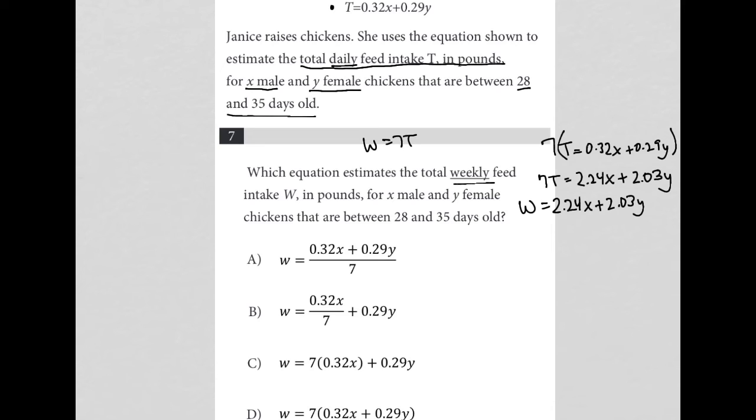But if we look at choice D, if we were to distribute the 7 across the parentheses, we would get exactly this equation. No other equation does that, right?